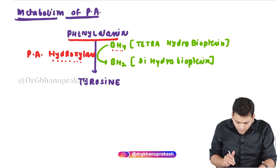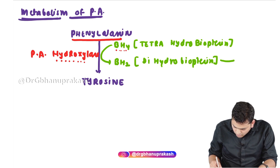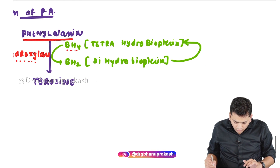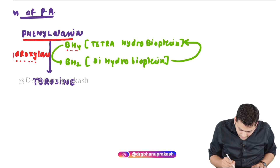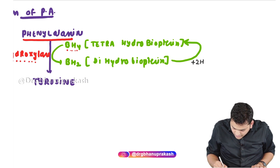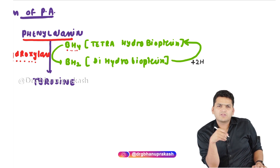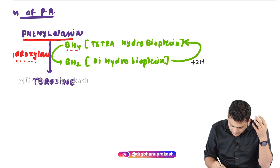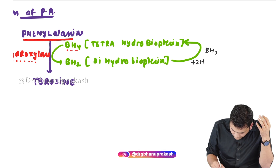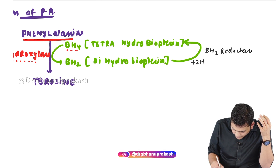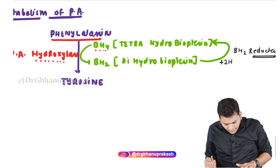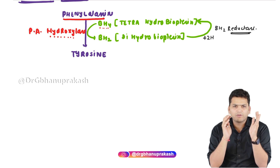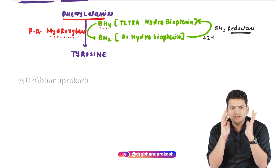To regenerate BH4, we convert BH2 back into BH4 by adding two molecules of hydrogen — a reduction reaction. The enzyme for this is BH2 reductase. So ultimately, two enzymes are required to convert phenylalanine to tyrosine: phenylalanine hydroxylase and BH2 reductase.